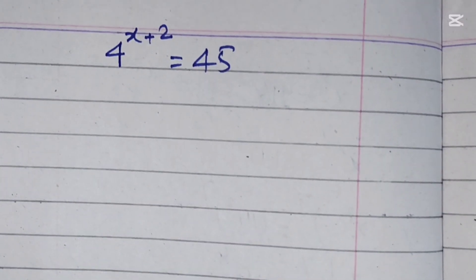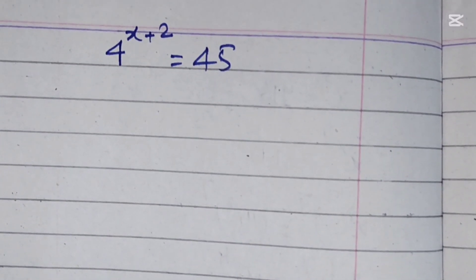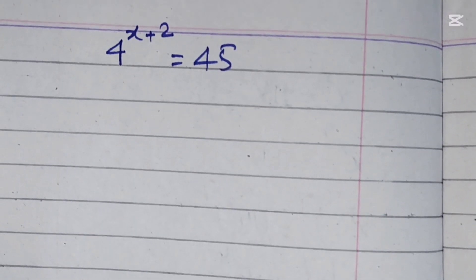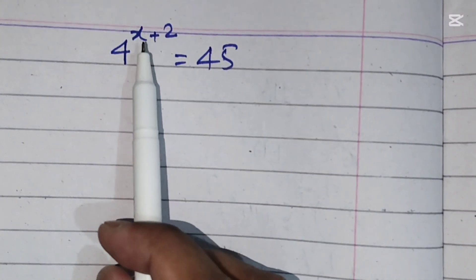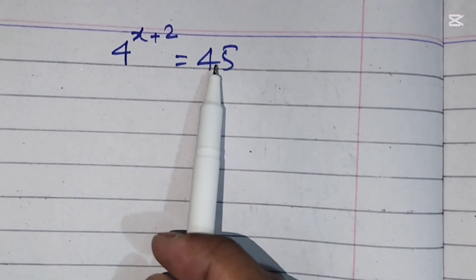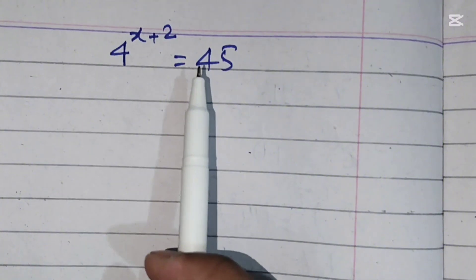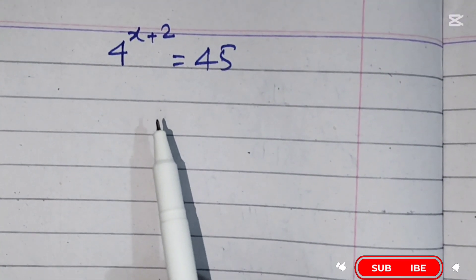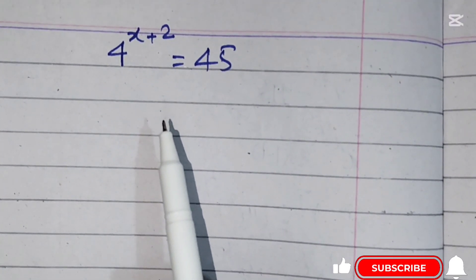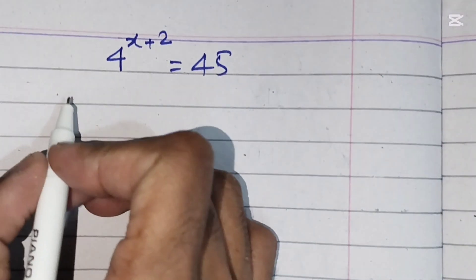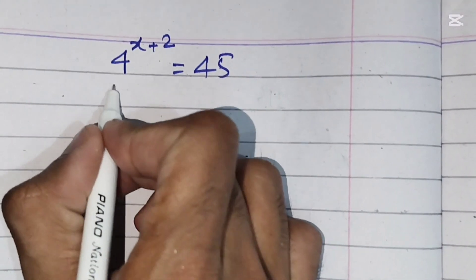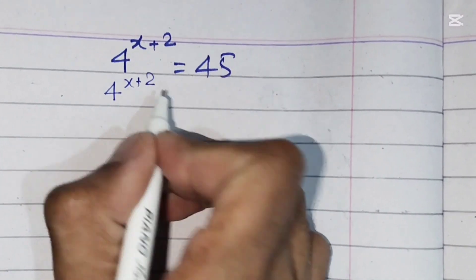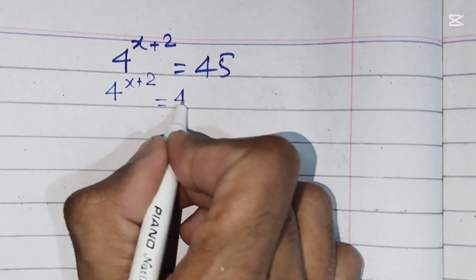Hi everyone, welcome to the new video. In this video we will solve a math problem: 4 raised to the power x plus 2 equals 45. You have to find the value of x. Before starting the video please like, share, comment, and subscribe to my channel. We start the solution of this question: 4 power x plus 2 equals 45.